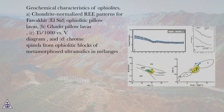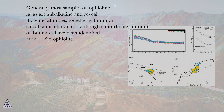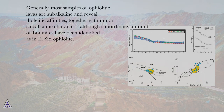Geochemical characteristics of ophiolites: (A) chondrite-normalized REE patterns for Fawakhir (L-CID) ophiolitic pillow lavas, (B) Gadir pillow lavas, (C) Ti vs. V diagram, and (D) chrome spinels from ophiolitic blocks of metamorphosed ultramafics in mélanges. Generally, most samples of ophiolitic lavas are subalkaline and reveal tholeiitic affinities, together with minor calc-alkaline characters, although subordinate amounts of boninites have been identified as L-CID ophiolites.